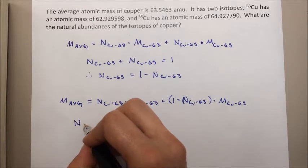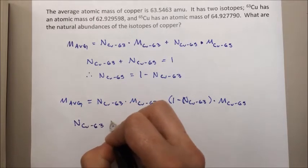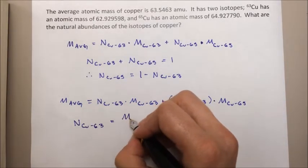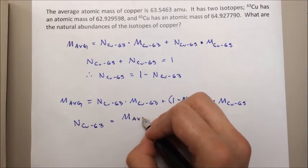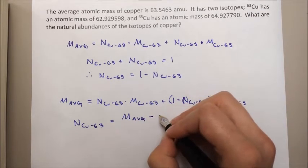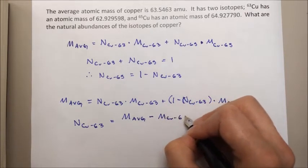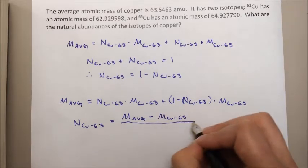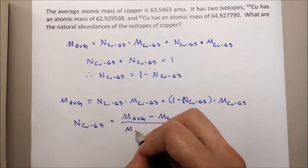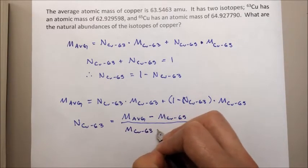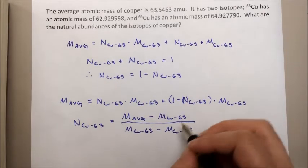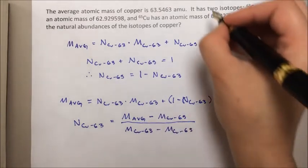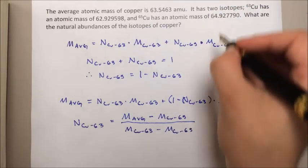The natural abundance of copper 63 equals a fraction. The numerator of which is the average atomic mass minus the mass of copper 65, then the denominator of that is the mass of copper 63 minus the mass of copper 65. Now we know the masses of those two isotopes from the problem up here.